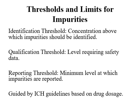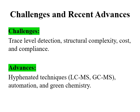There are three thresholds and limits for impurities as defined by ICH. The reporting threshold is the minimum level at which impurities are required to be reported. The identification threshold is the concentration above which impurities are required to be identified. The qualification threshold is the level requiring safety data.